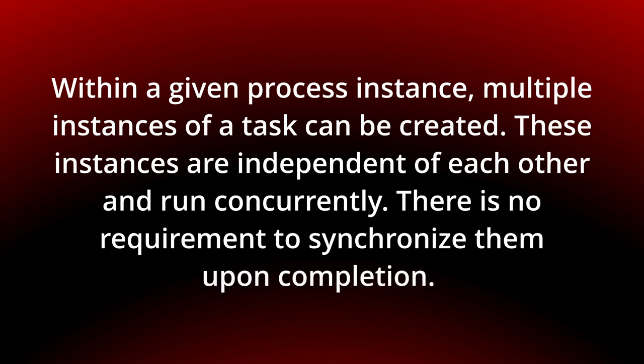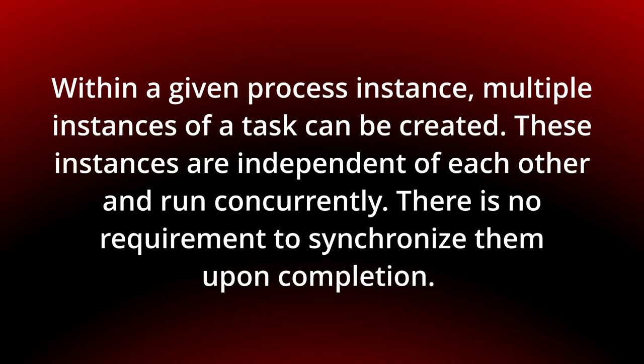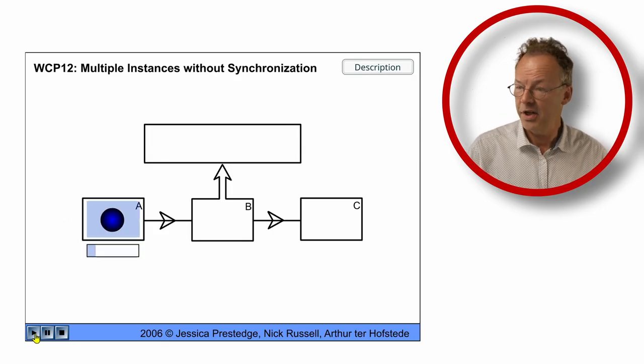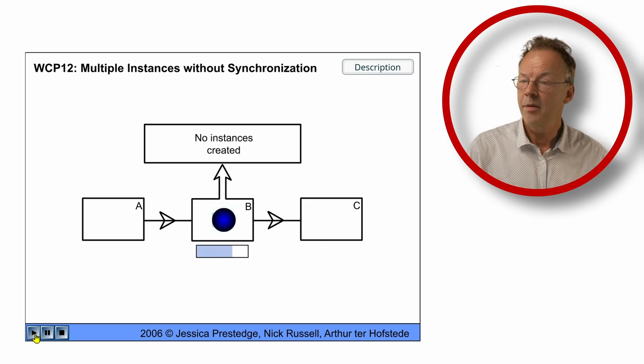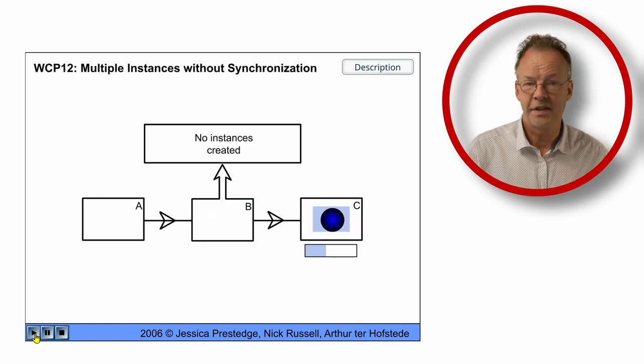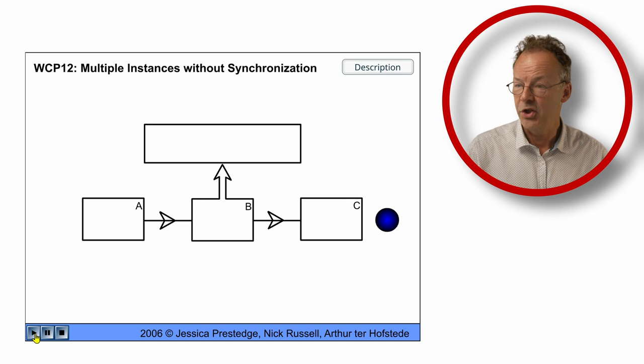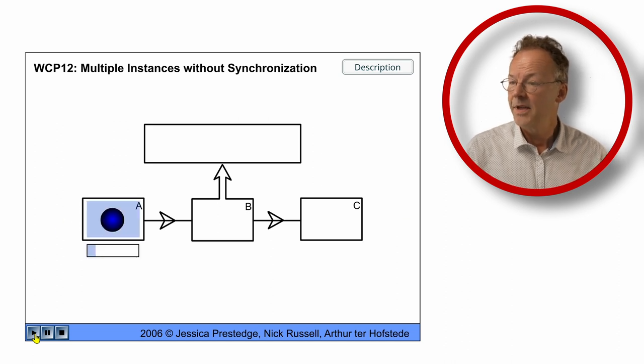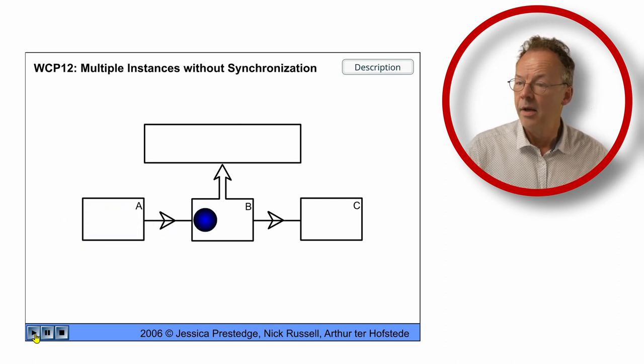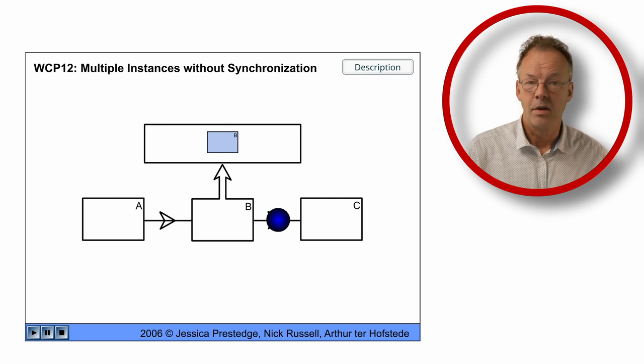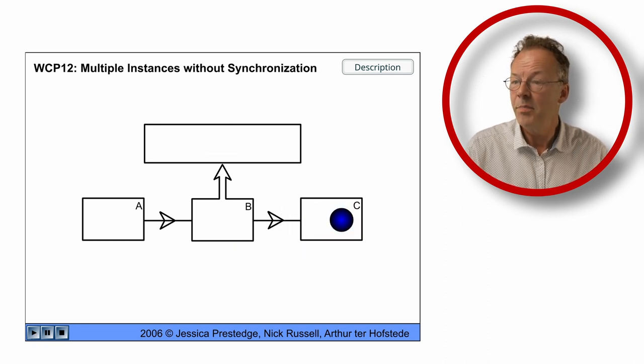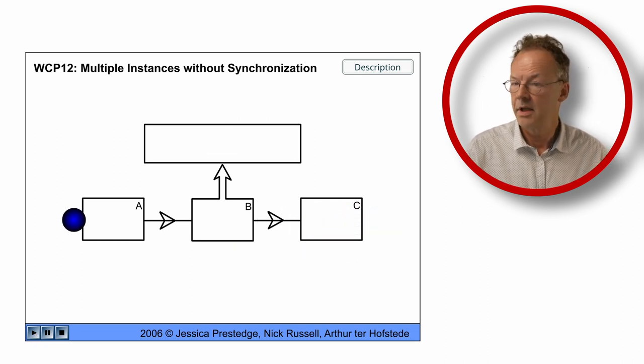You can see the behavior in the original flash animation. Here in the flash animation we have A and then B creates no instances in the first iteration. In the second iteration B creates one instance of B and then C is completed.